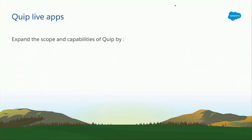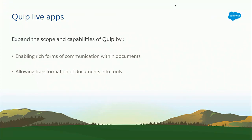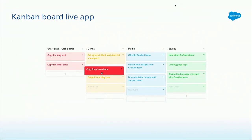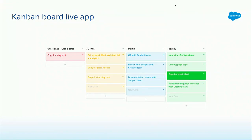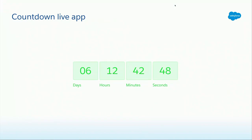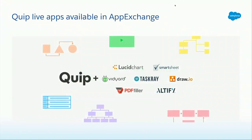Live Apps allow you to expand the scope and functionality of the Quip platform by converting your documents into a rich form of communication, allowing you to convert your documents into tools for your own custom workflows, and providing an interface with other third-party applications so that you can have live data right inside Quip. Here's one example — a Kanban board Live App you can insert right inside your Quip document. Here's yet another example — a countdown Live App where you can set a countdown for a particular event, say a release date, and it will keep ticking continuously. We have a bunch of other Live Apps available in the Salesforce AppExchange, and most of them are free.